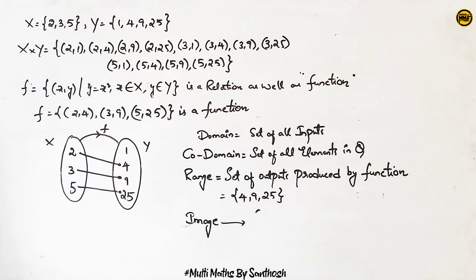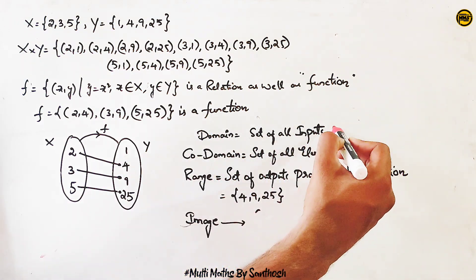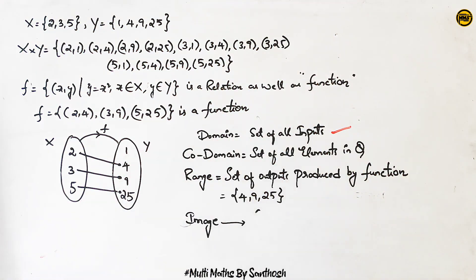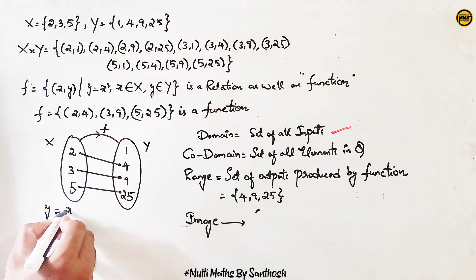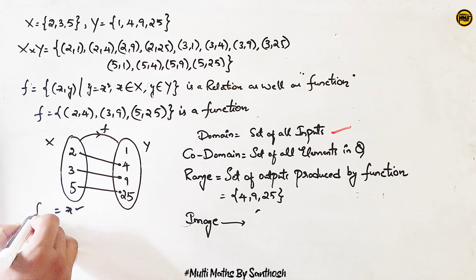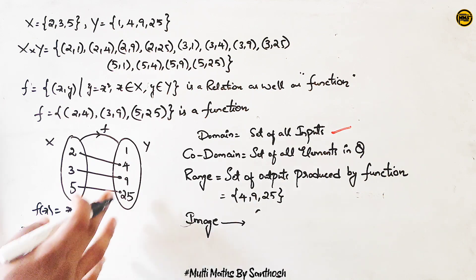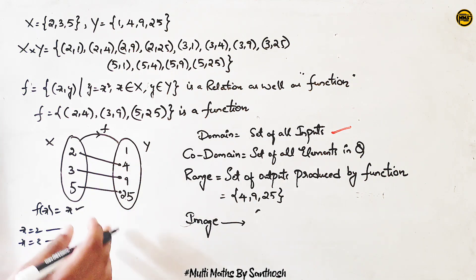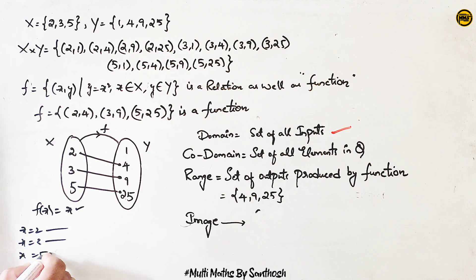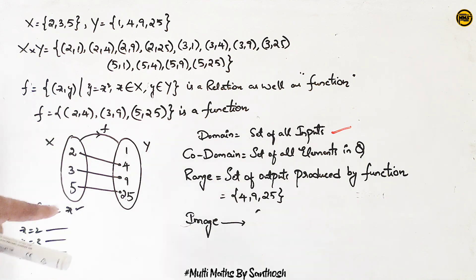What is the domain? If you have a set of inputs for a function, it is the domain. Domain is equal to the set of all inputs. For the function f(x) = x²: input x = 2 gives output 4, input x = 3 gives output 9, input x = 5 gives output 25. If you have the set of inputs, we call that the domain. That is the domain.